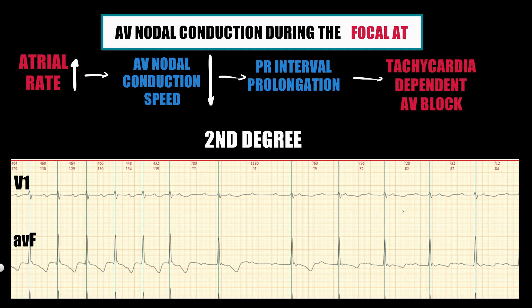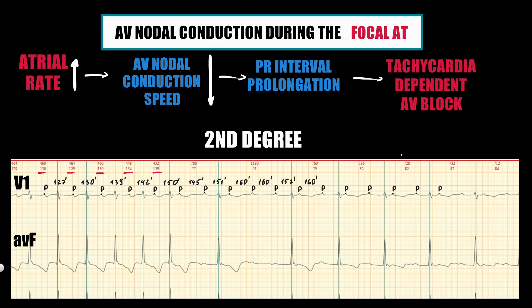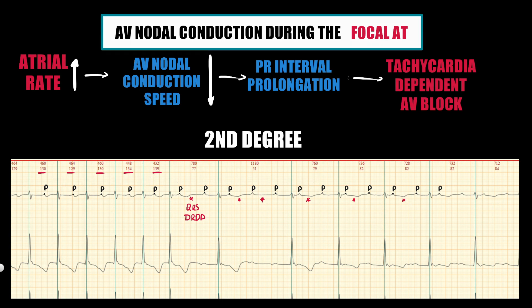In the last ECG example, we see atrial tachycardia with a heart rate of 130–140 bpm. After this, the heart rate slows down to 80 bpm. We clearly see the P-wave and measure the atrial rate increasing from 130 to 160 bpm. Some impulses are not conducted to the ventricles, resulting in QRS dropping. Estimating conduction by counting P-waves and QRS complexes, we see second-degree AV block with conduction ratios of 2:1, then 3:1, then 2:1 again — which explains the decrease in heart rate by half.